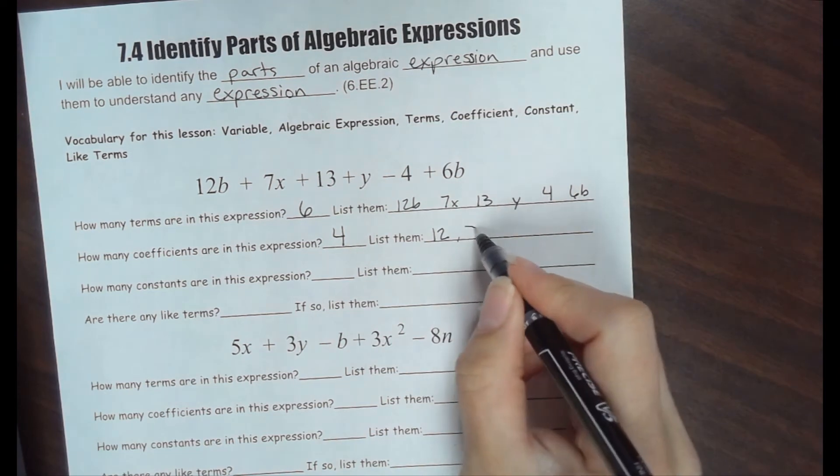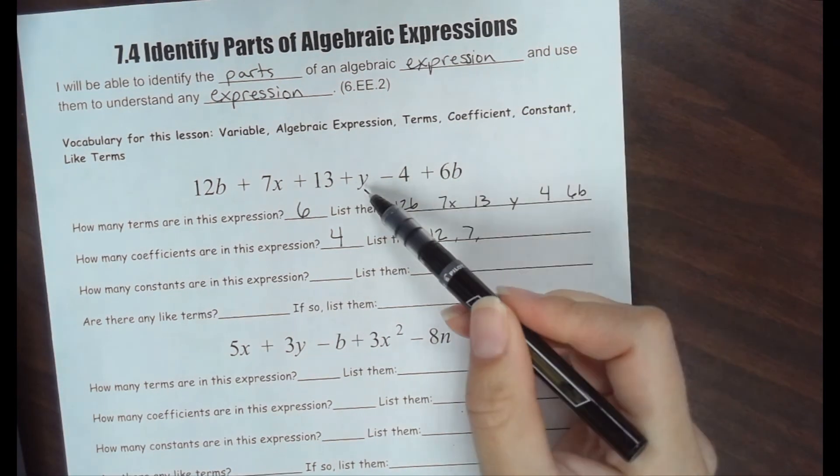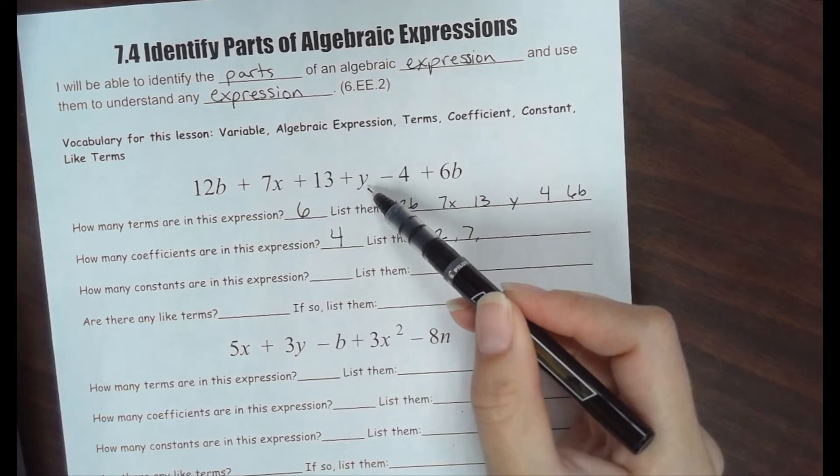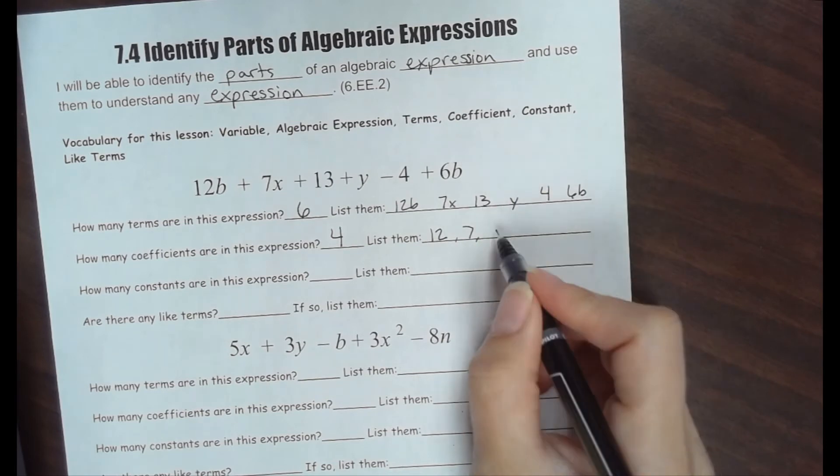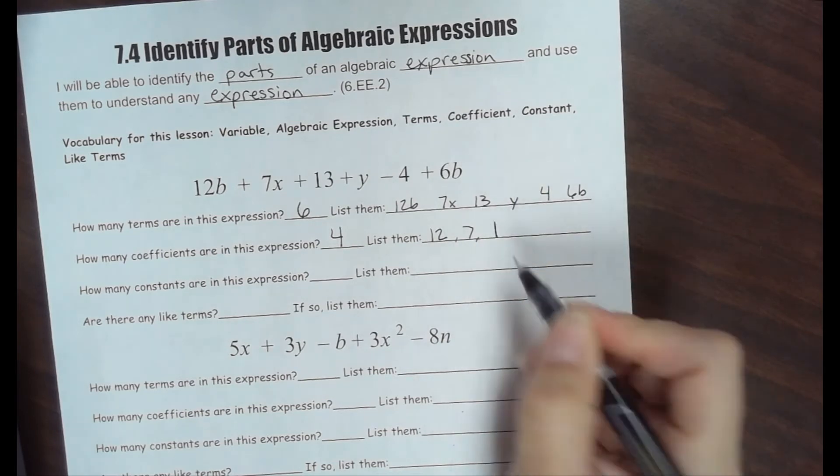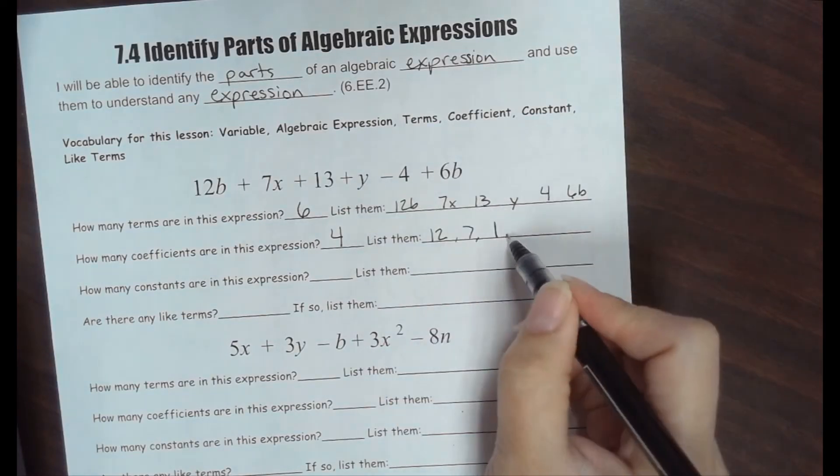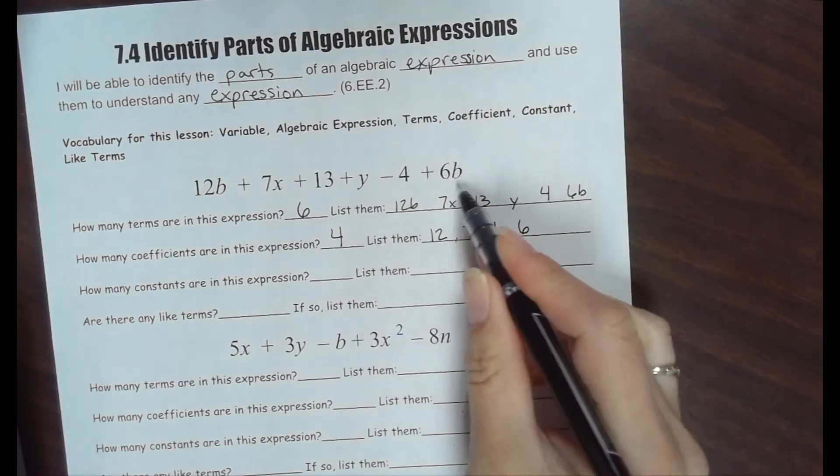7 is a coefficient. Now, some of you might be like, wait, there's nothing there. Every time you have a variable, you have a coefficient. How many y's do we have here? We have 1. You don't have to write 1 times y, but you can. So the coefficient of that is actually 1, 1y. And then 6, because there are 6b's.